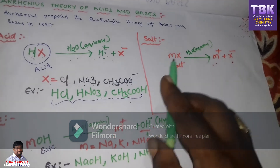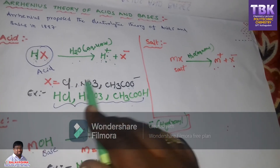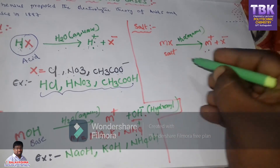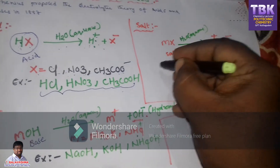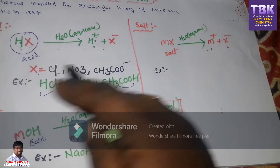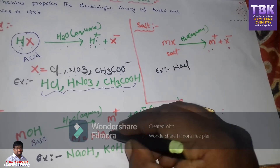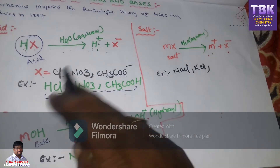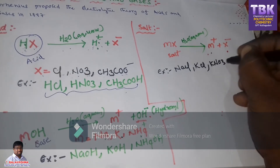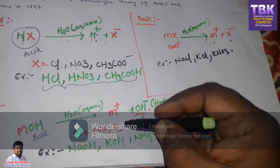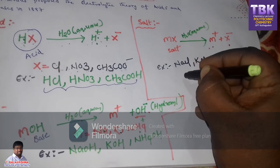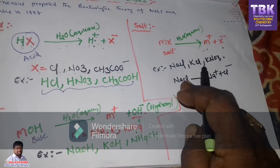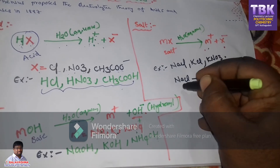For examples of salt, we know M can be Na, K, or ammonium, and X can be Cl minus. If M equals Na and X equals Cl, that is NaCl. If M equals K and X equals Cl, that is KCl. If M equals K and X equals NO3, that is KNO3. When NaCl is split into ions, it produces Na+ and Cl minus — it neither gives H+ ions nor OH minus ions in aqueous solution, so it is called a salt.